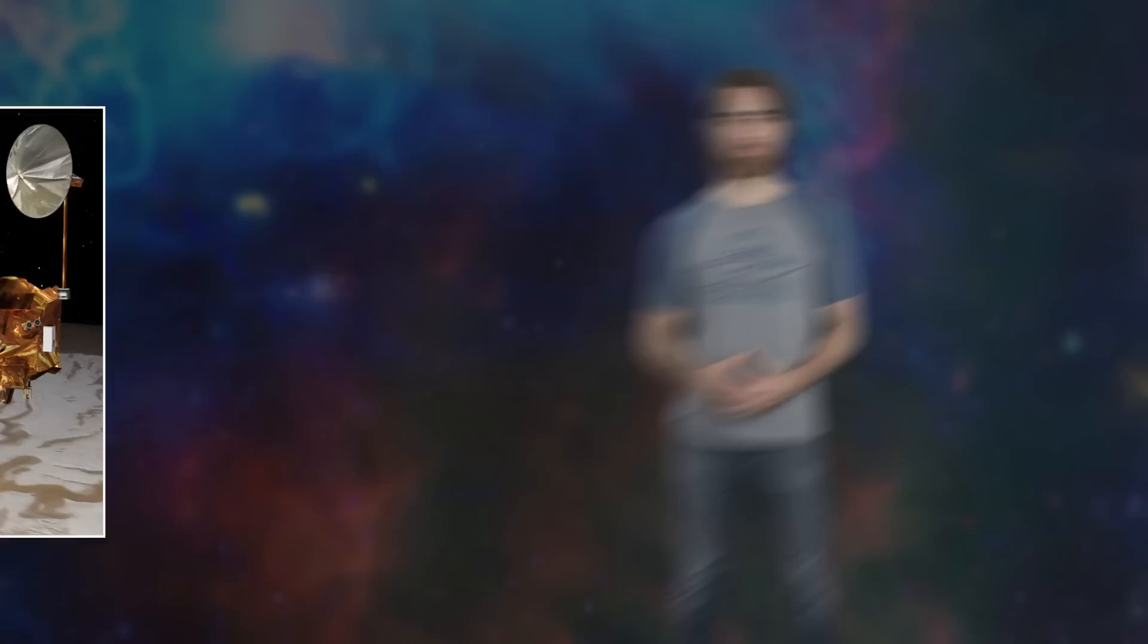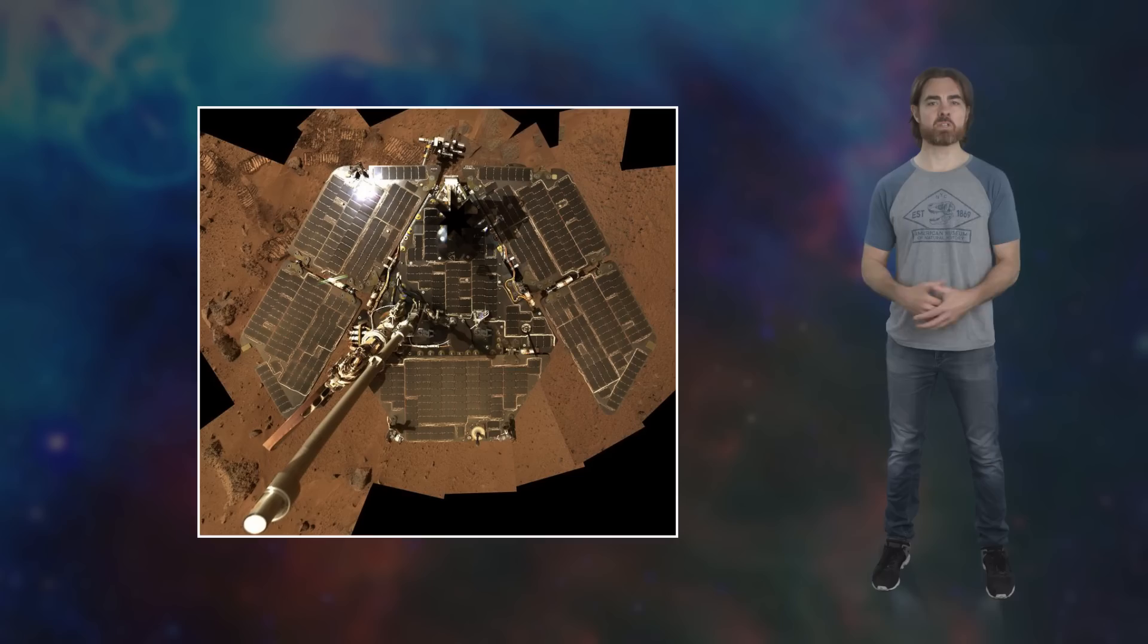And that brings us to Opportunity, otherwise affectionately known as Mars Exploration Rover B. It landed in 2004 with its twin MER-A, better known as Spirit. These six-wheeled, golf cart-sized robots were Swiss Army knives of geological lab instruments.